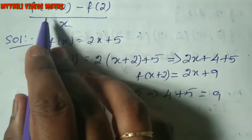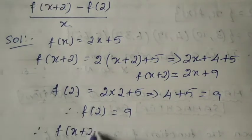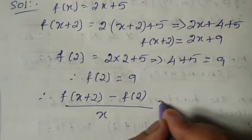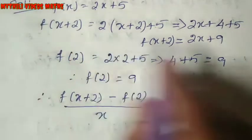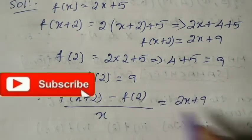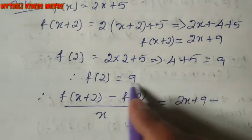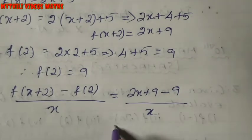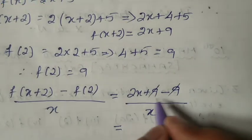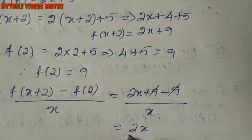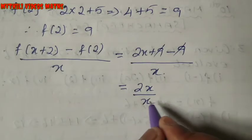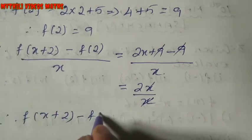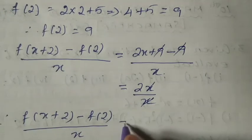Now both values are found. We substitute into the equation: f(x+2) minus f(2) divided by x. Instead of f(x+2) we substitute 2x+9, and instead of f(2) we substitute 9. So we get (2x + 9 - 9) divided by x, which simplifies to 2x divided by x. Therefore the final answer is f(x+2) minus f(2) divided by x equals 2.